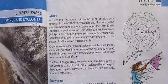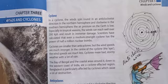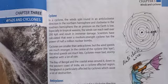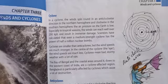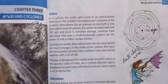The Bay of Bengal and the coastal areas around it, down to the western coast of India, are a cyclone-affected region. In South Asia, Bangladesh is particularly affected by cyclones which cause a lot of destruction. Inshallah, in tomorrow's lecture we will talk about the regions in South Asia which are deeply affected by cyclones, and our next topics are anti-cyclones and tornadoes. Thank you so much for today, and Allah Hafiz.